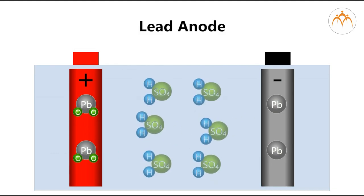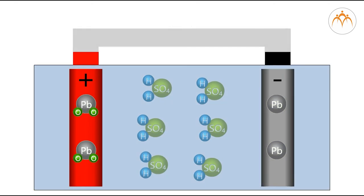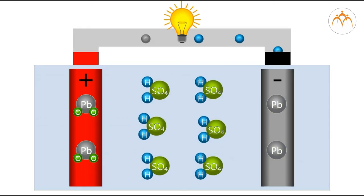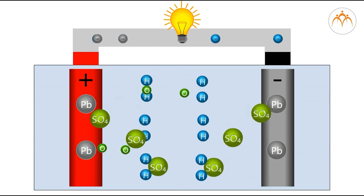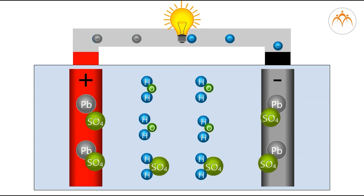The lead anode is also known as the negative electrode in the lead acid cell. Its active material is sponge lead, which increases the available surface area for reacting with sulfuric acid electrolyte.